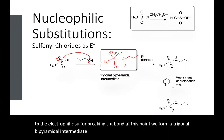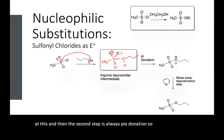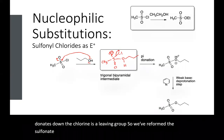The second step is always pi donation. So the O minus donates down and the chlorine is a leaving group. We've reformed the sulfonate, but we now have a sulfonate ester.